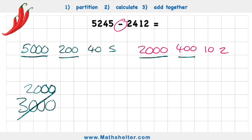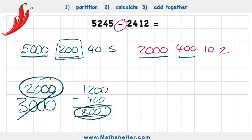And I'm going to give my 1,000 to this 200 here. So my question now says 1,200 subtract the 400, which is 800. So far I have 2,800. Now I have 40 subtract 10 is 30 and 5 subtract 2 is 3.